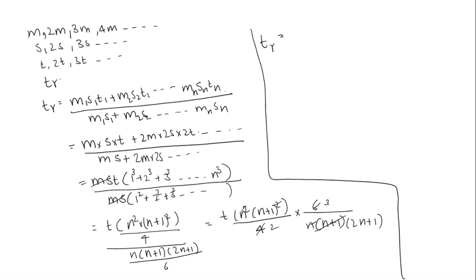We will get TR equals N times N plus 1 times 3 times T divided by 2 times 2N plus 1. We can also write this as 3N times N plus 1 times T divided by 2 times 2N plus 1.